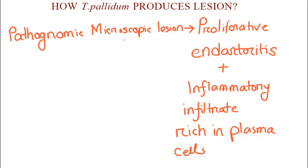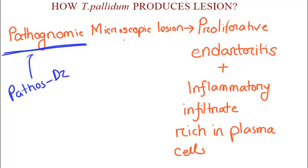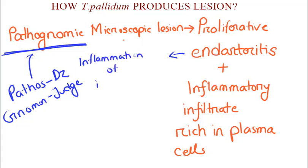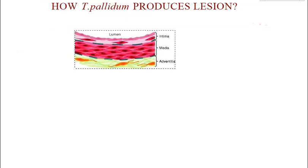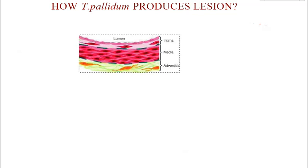Let us analyze this statement. The word pathognomonic comes from Greek words: pathos means disease and gnomon means to judge. Proliferation means rapid increase in number of cells. Endarteritis means inflammation of the inner lining of an artery. So, if you see rapid inflammation in the arterial intima — that is proliferative endarteritis — under the microscope, with profuse inflammation and a lot of plasma cells, you can be pretty sure that it is syphilis.